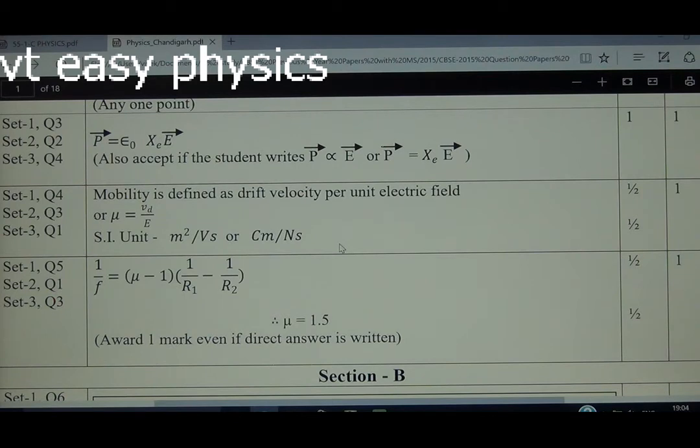Such as meter squared per volt second or centimeter per second. We can also derive it by putting drift speed in terms of electric field: that is eEτ/m. Then it becomes e/m times τ. So coulomb per kilogram second, or coulomb second per kilogram, is also an SI unit for mobility.